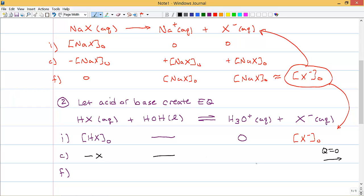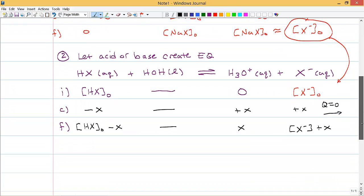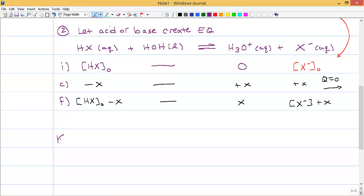All right, so that means I'm going to have a minus X. This is a liquid. I don't care. I'm going to have a plus X and a plus X. So, when I get to equilibrium, I can calculate my equilibrium. So, the good news is that I know for this particular guy that Ka is equal to the concentration of H3O plus times my X minus concentration divided by my HX concentration. But all of these are at equilibrium. And if you take a look, that's what this row right here is. This row is my equilibrium row.